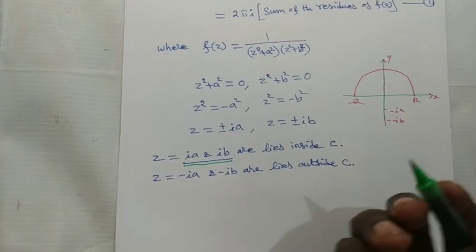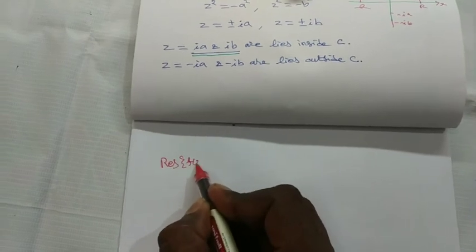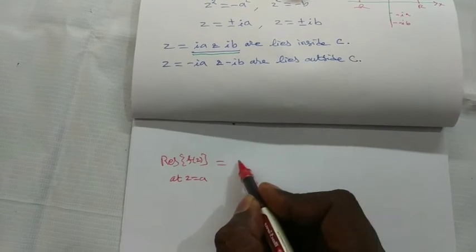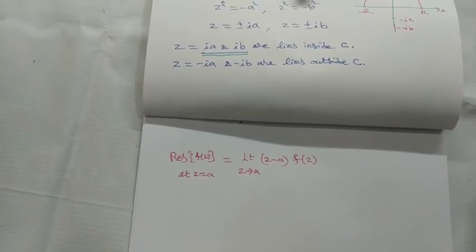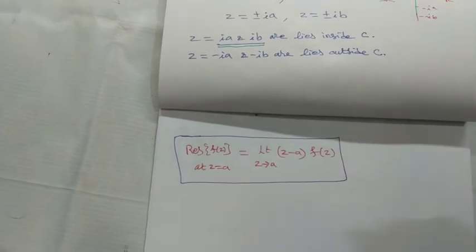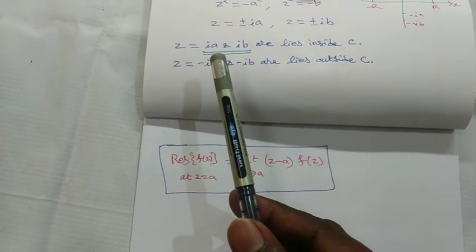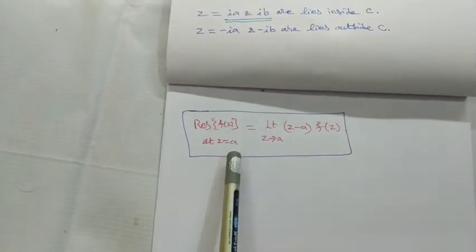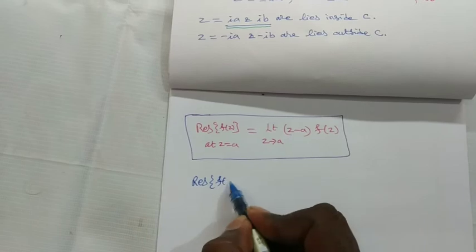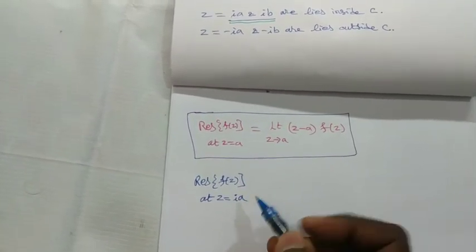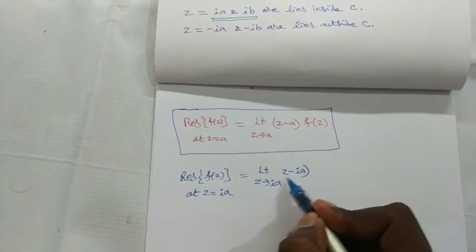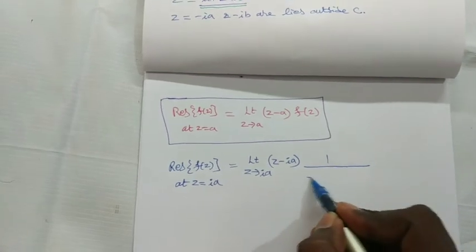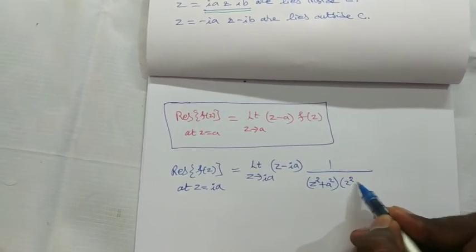So we find the residues for these two poles. The formula for the residue of f(z) at a simple pole z = a is: limit as z → a of (z − a)·f(z). There are two simple poles inside C: ia and ib. For the first pole z = ia, we compute: limit as z → ia of (z − ia)·f(z), where f(z) = 1/[(z²+a²)(z²+b²)].